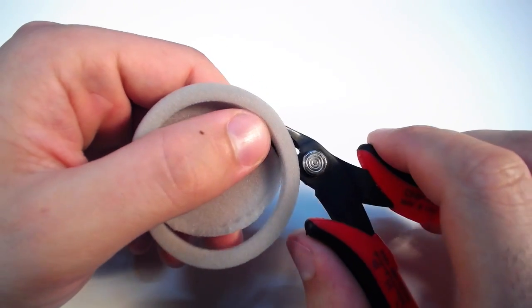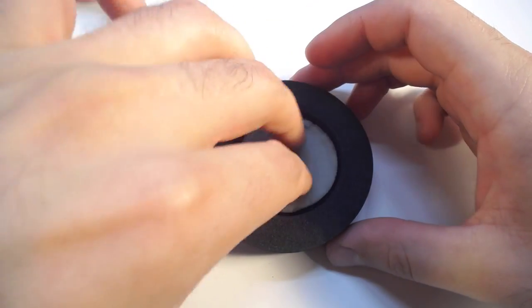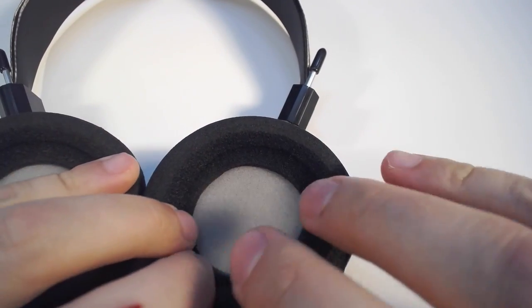Trim the lip off the stock Sennheiser pads and place them inside your Elkush pads and install them carefully on your Gratos.